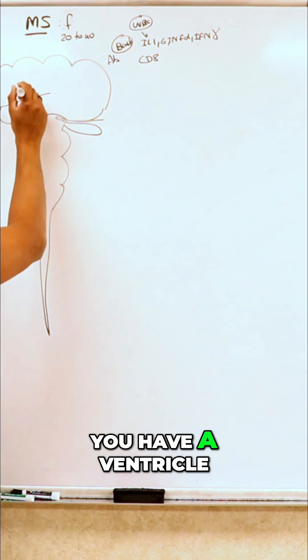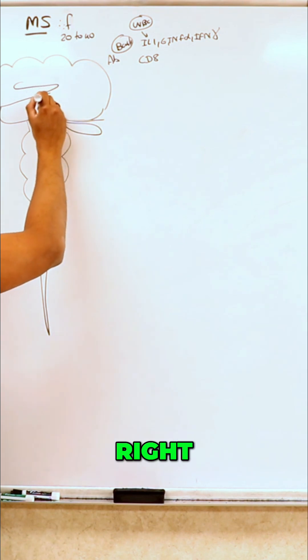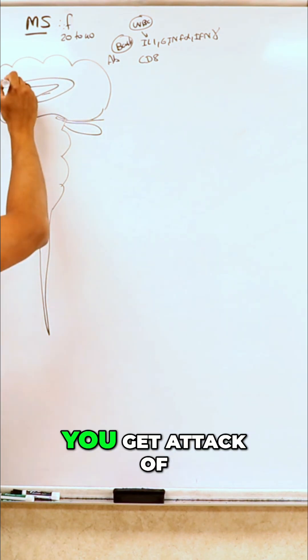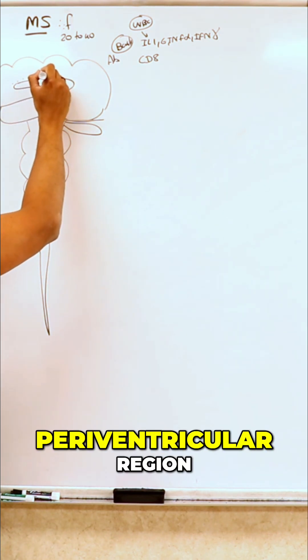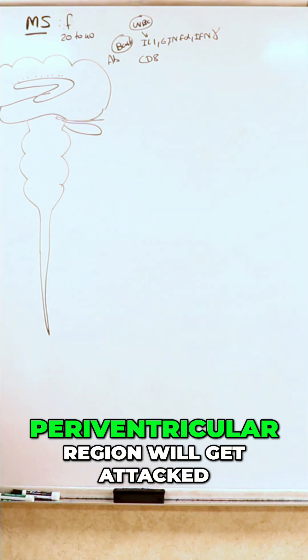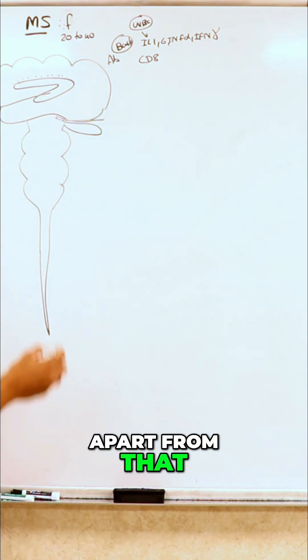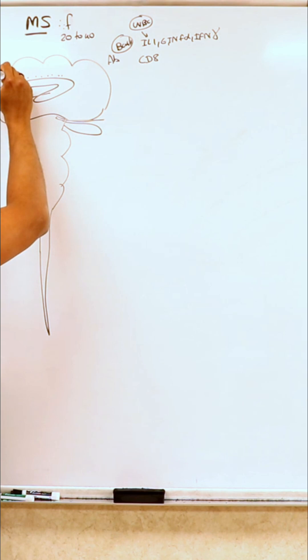You have a ventricle here. Typically, you get attack of the periventricular region. Apart from that, you will also get juxtacortical as well as cortical areas.